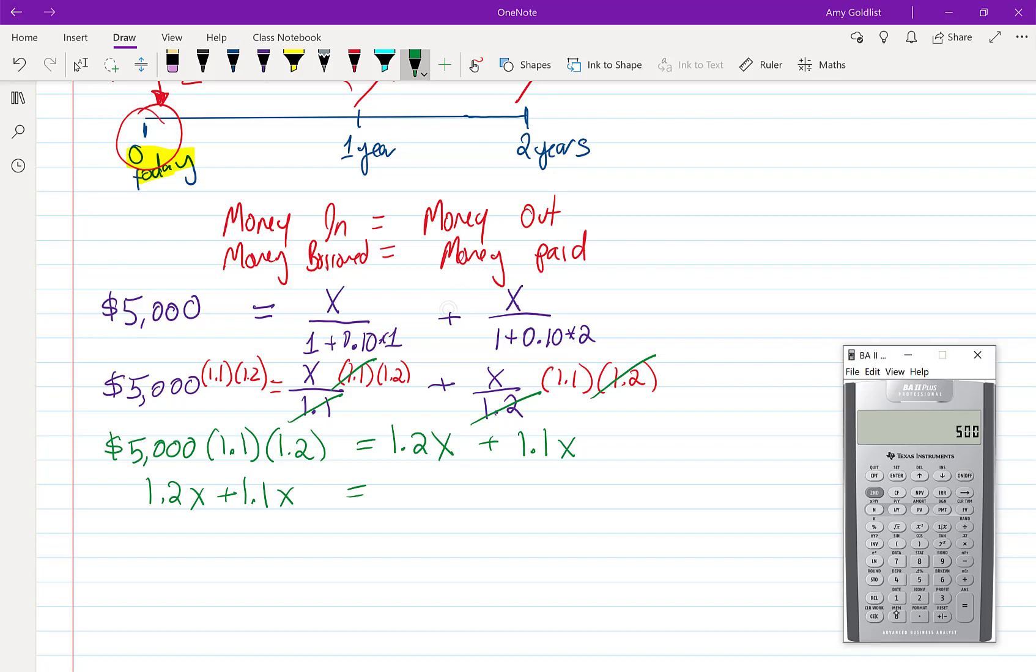So $5,000 times 1.1 times 1.2 and I get $6,600. When I add these together because remember I'm distributing this through.